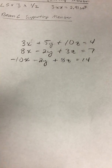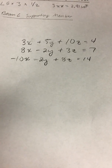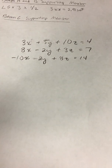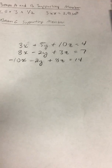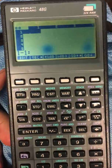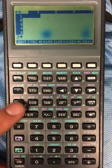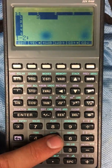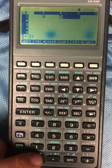So we have 3x plus 5y plus 10z equals 4. We're going to ignore the 4, 7, and 14 on this part and only write the coefficients. So we have 3, 5, and 10.